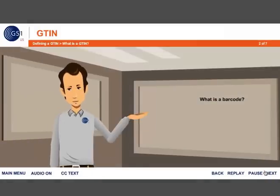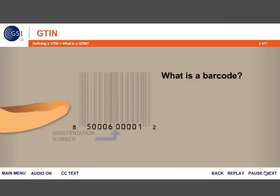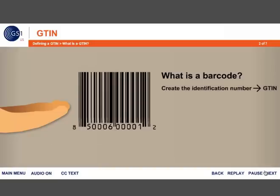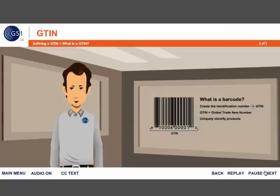Now that you have a company prefix, you may be wondering how to get started identifying your products and labeling them with barcodes. A barcode includes multiple lines and spaces as well as numbers. The lines and spaces are actually the barcode, while the numbers below are the identification number that corresponds to the barcode. Before you can generate the barcode, the identification number — in this case a G10 — needs to be assigned. G10 stands for Global Trade Item Number. A G10 uniquely identifies products in the supply chain.